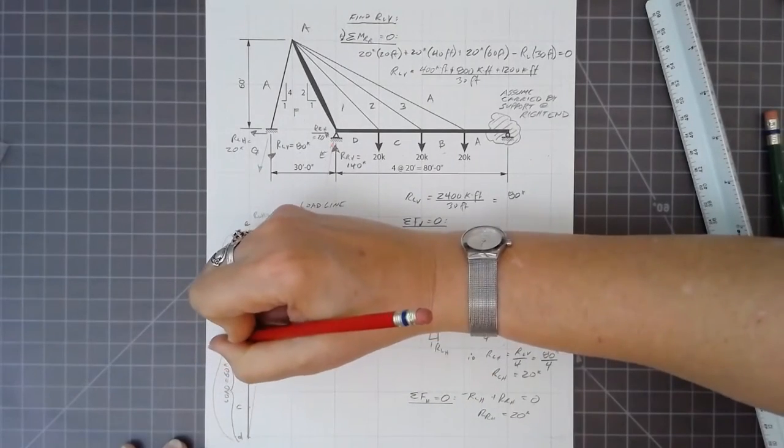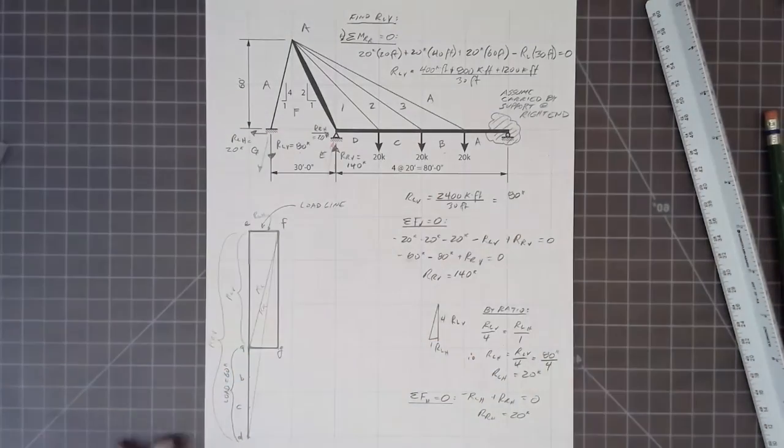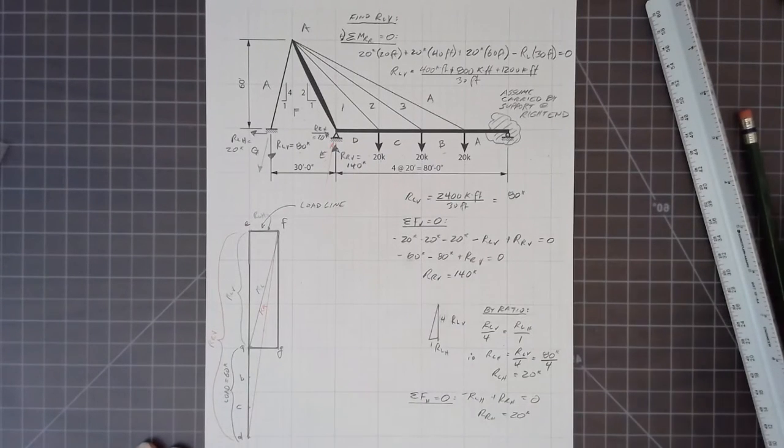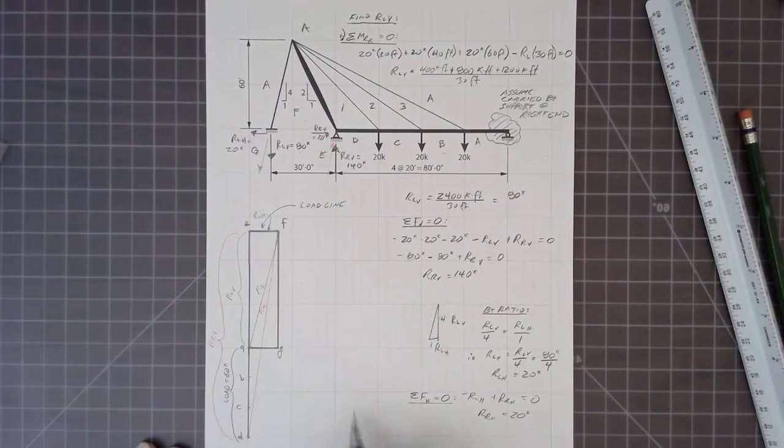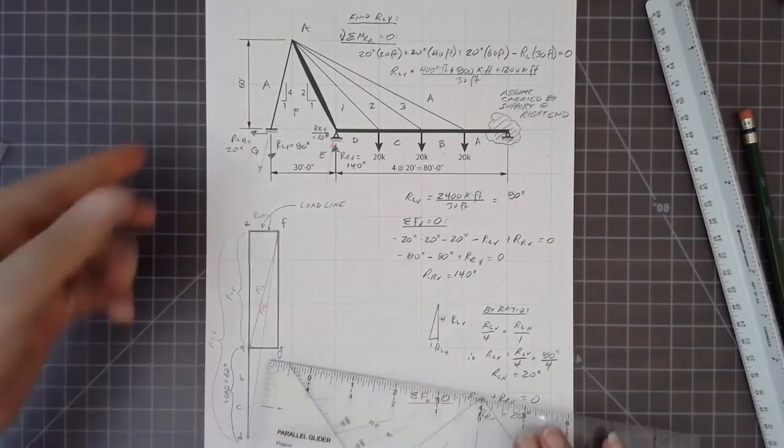And then the diagonal from D to F again, that's the sloping reaction. So now we're looking for the intersection points of D1 and F1, C2 and F12, B3 and A3.